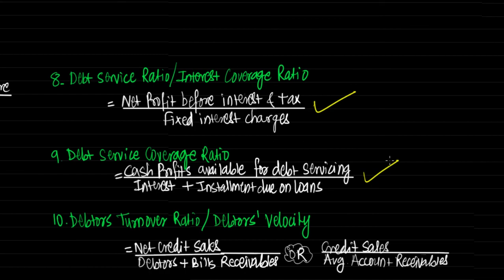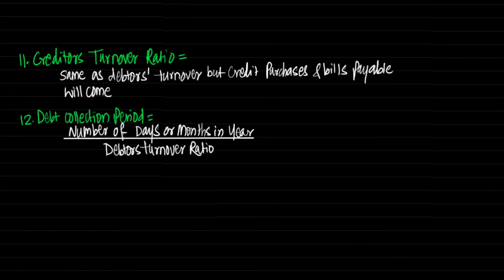Next ratio is debtors' turnover ratio or debtors' velocity, calculated as net credit sales divided by debtors plus bills receivable, or credit sales divided by average accounts receivable. Debtors and bills receivable may be taken as the average of opening and closing accounts; if details are not available, only the closing balance may be considered. Next is creditors' turnover ratio, calculated the same way but using credit purchases and bills payable. The last ratio is debt collection period, calculated as number of days or months in a year divided by debtors' turnover ratio. Its significance is that it indicates credit and collection policy and the effectiveness of collection from debtors.